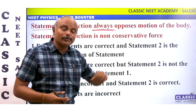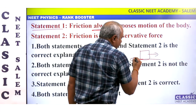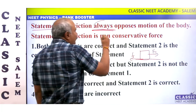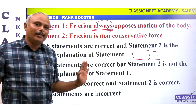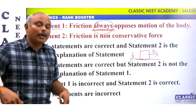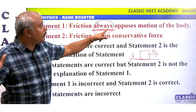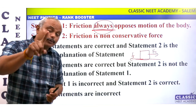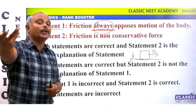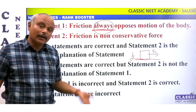Friction always opposes the motion of the body. If we are going to move the body, we are going to the opposite direction — friction and applied force. But that is not always the same. Friction is in the body's move direction in some cases. For example, walking — friction does not always act opposite to motion. It is opposite to the relative motion of the body; it is not always opposing the absolute motion of the body.